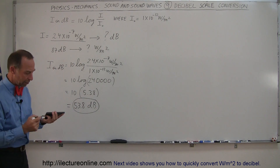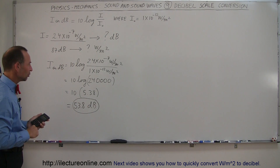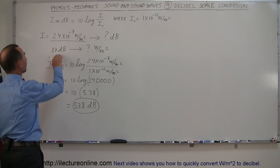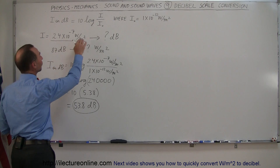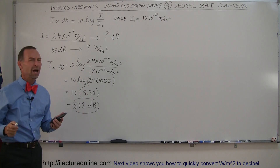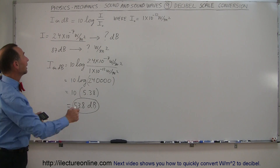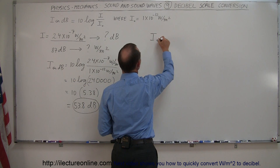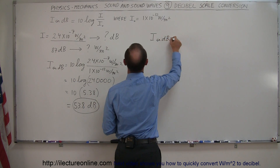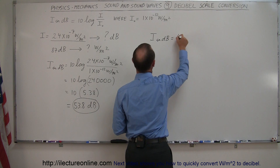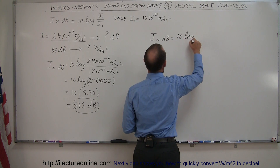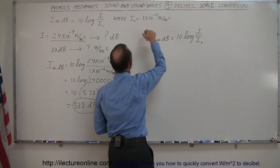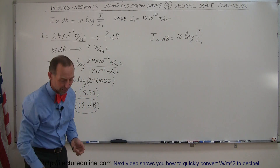So intensity in decibels, when the intensity you're hearing is 2.4 times 10 to the minus 7 watts per square meter, is 53.8 decibels — kind of a not-too-loud conversation between two people. Now let's say we hear a sound intensity of 87 decibels and we want to convert that back to watts per square meter. We start with the equation: intensity in decibels is equal to 10 times the log of I divided by I-sub-nought, where I-sub-nought is the threshold of hearing — the faintest sound that we can hear.